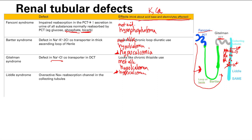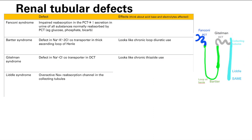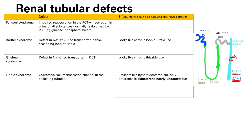The next one is Liddle syndrome. We have Liddle syndrome and SAME at the collecting tubules. Liddle syndrome is due to overactivity of the sodium reabsorption channel in the collecting tubules — this sodium channel is working too much. What hormone is responsible for activating this channel? It's aldosterone. So this is going to be pretty much the same presentation as hyperaldosteronism, except that aldosterone is pretty much undetectable.